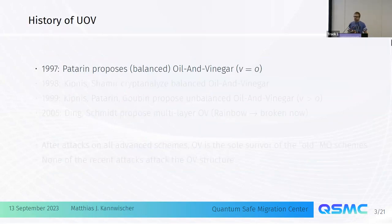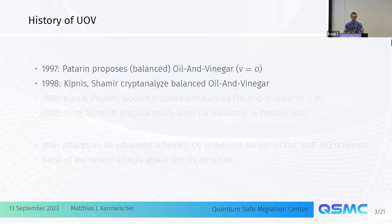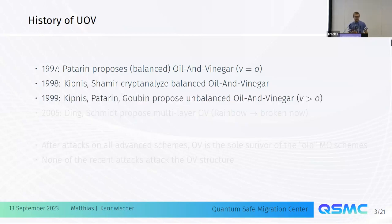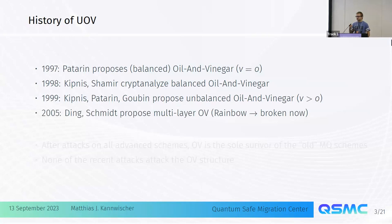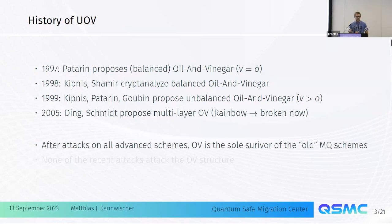The history goes back to 1997, where the scheme was originally proposed. Unfortunately the original parameters were not secure, so there was an attack shortly after. But if you choose the parameters differently and get to what's called Unbalanced Oil and Vinegar, the scheme is still secure. A multilayered variant called Rainbow was proposed, but that is now broken. The original Unbalanced Oil and Vinegar as proposed in 1999 still remains unbroken today. UOV is the only survivor of these old MQ schemes, and none of the attacks here attack its structure.